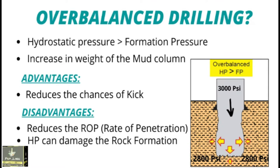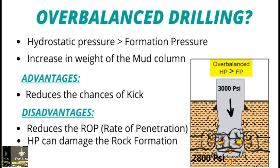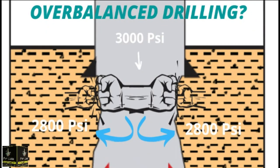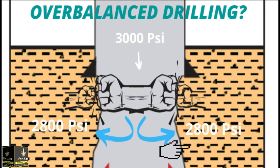As you see in the image, 3000 pressure is applied from the wellbore and the formation pressure is 2800. The pressure applied from the wellbore is known as the hydrostatic pressure, which is greater than the formation pressure — this situation is known as over-balance. In this condition, the force is applied from the wellbore and we maintain pressure more than the reservoir pressure, so the fluid enters into the formation. As you see in the figure, the fluid is entering into the formation because pressure is applied from the wellbore. This is known as over-balance drilling.